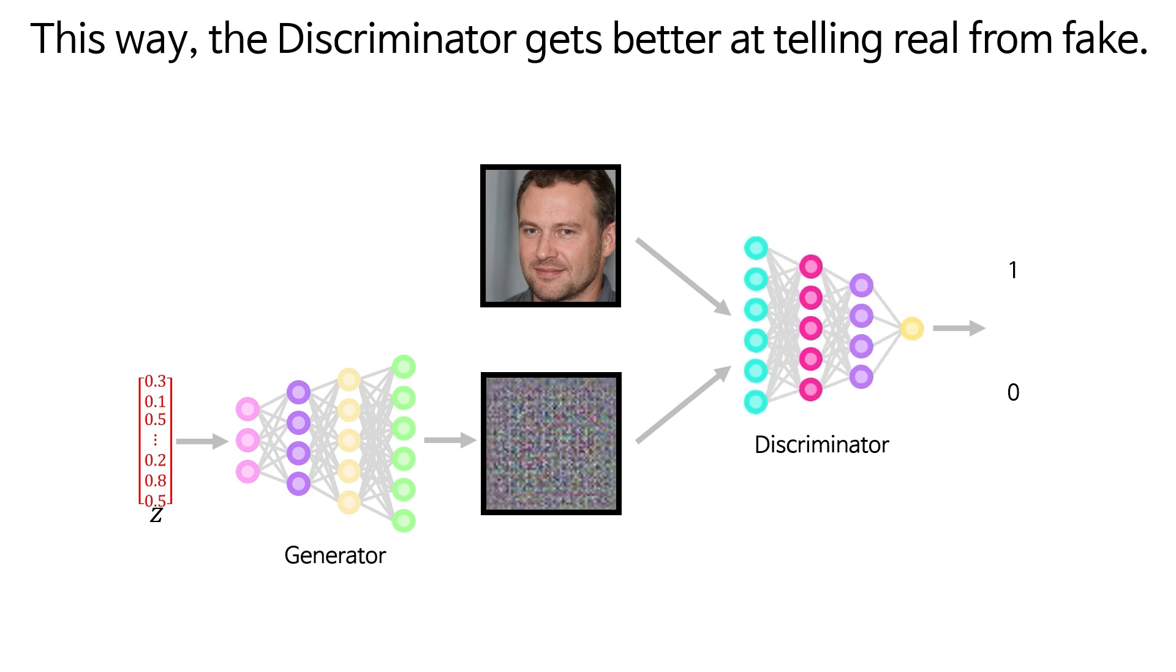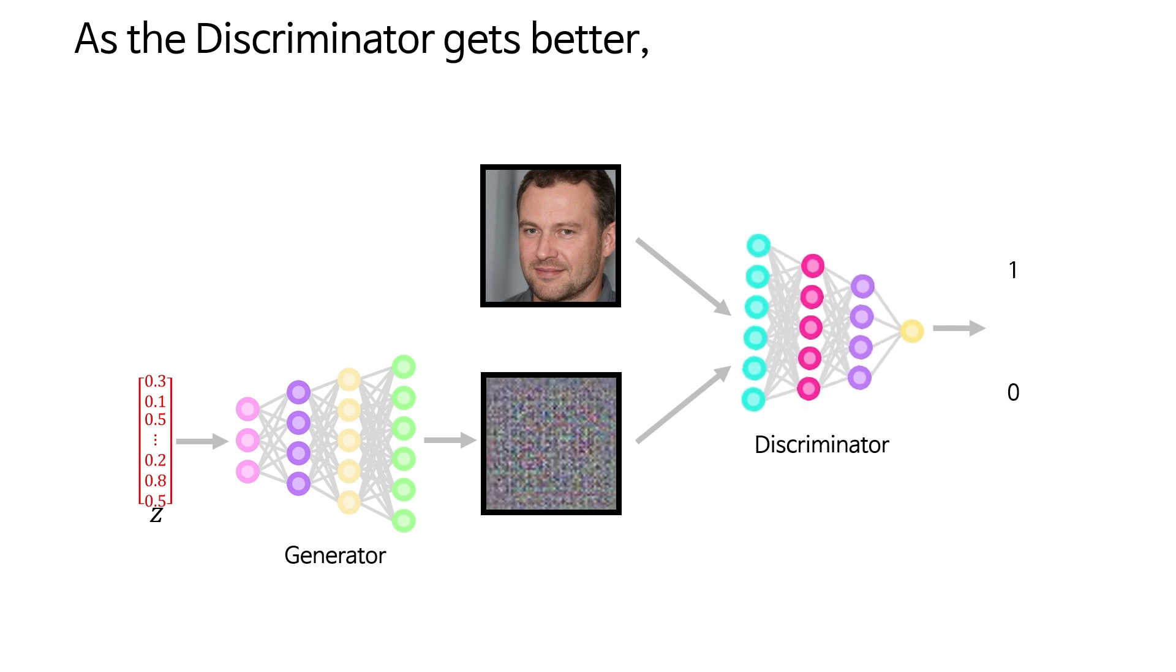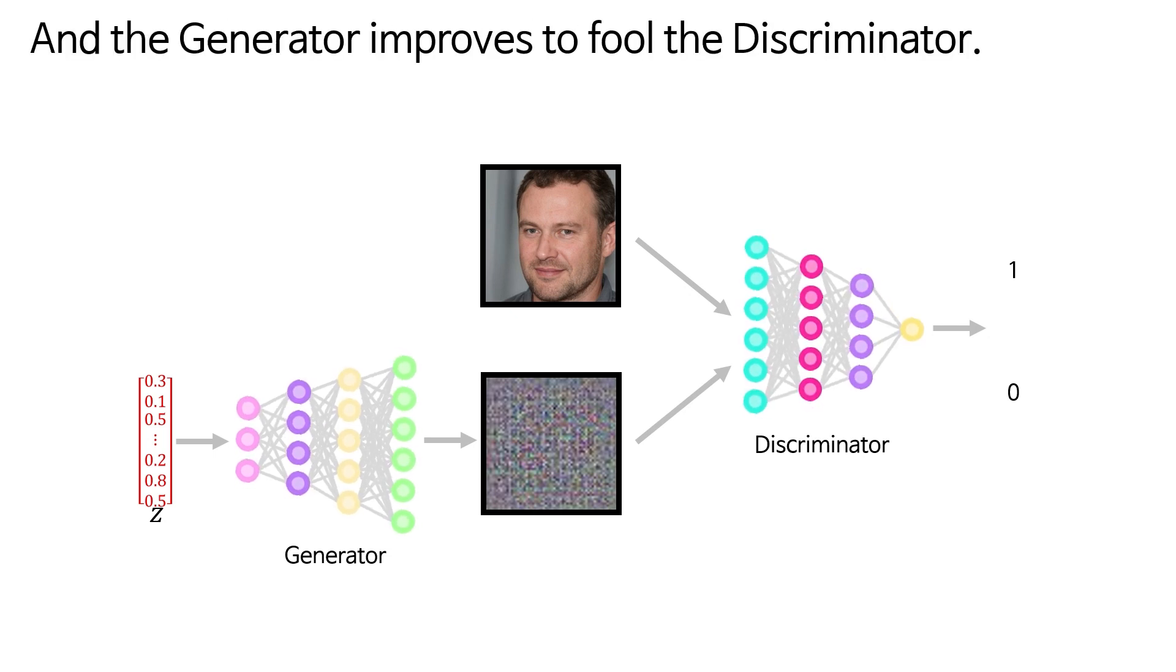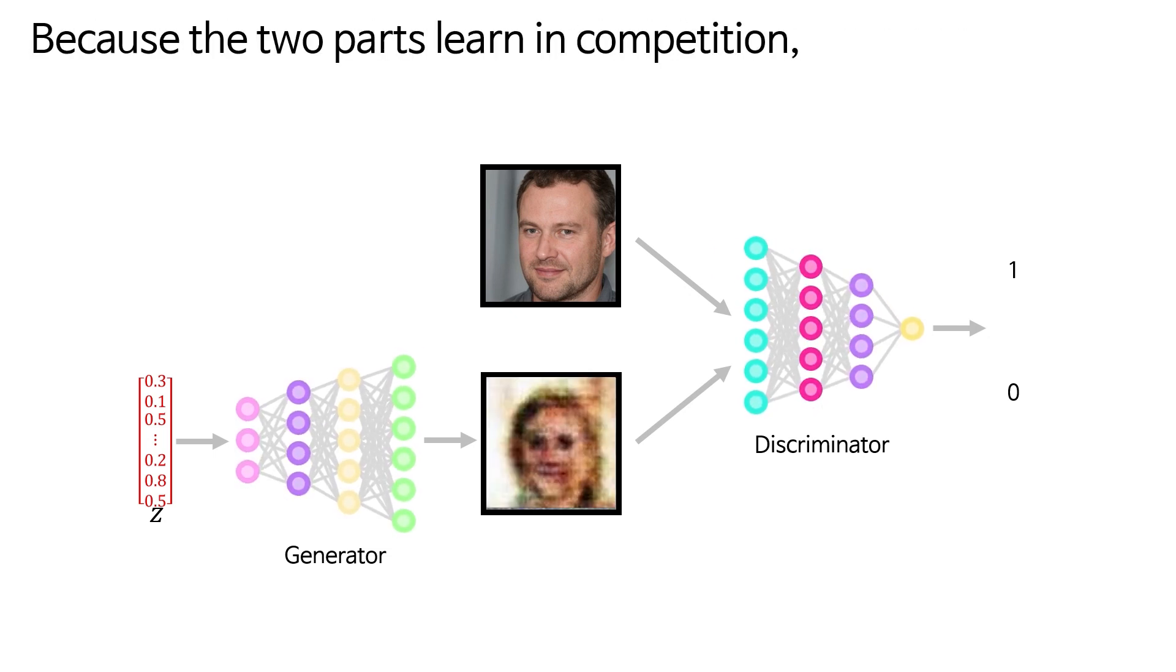This way, the discriminator gets better at telling real from fake. As the discriminator gets better, the generator improves to fool the discriminator. Because the two parts learn in competition, we call it a generative adversarial network.